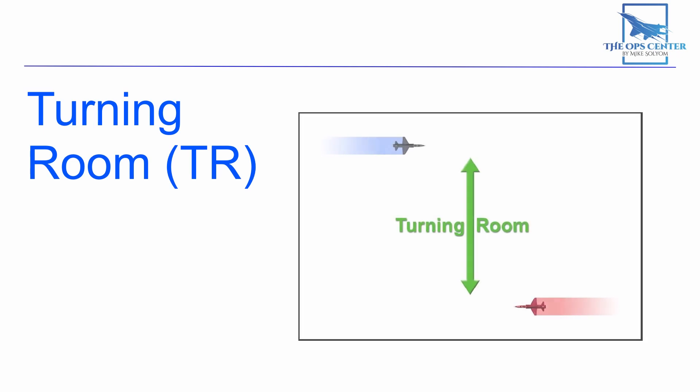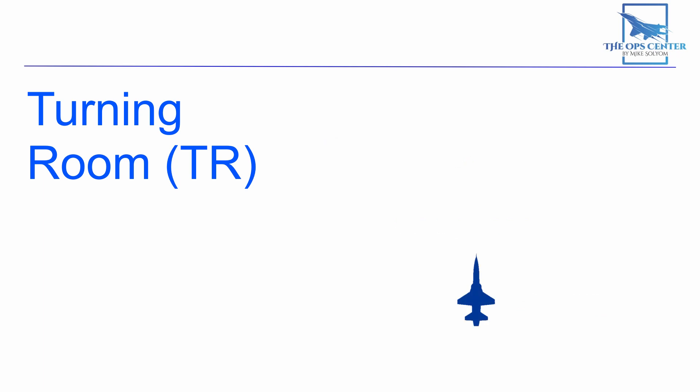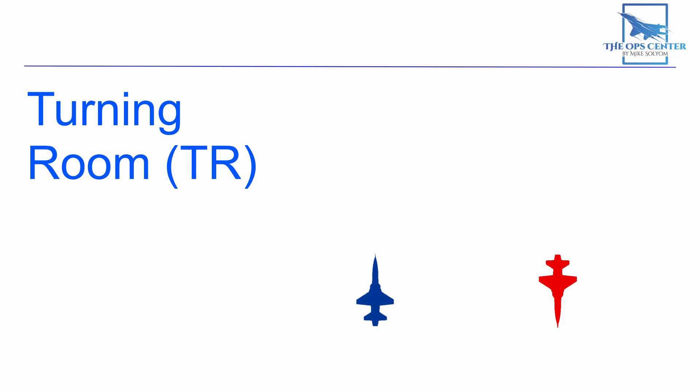Turning room is any displacement from the bandit's flight path in any plane. If you're trying to turn onto a bandit's tail when you're passing by really close, you don't really have the room needed to get onto a six o'clock. But if you moved out before the pass, you can now easily convert onto his tail. That's called building turning room, and an important thing to remember is that turning room for the attacker is also turning room for the defender.